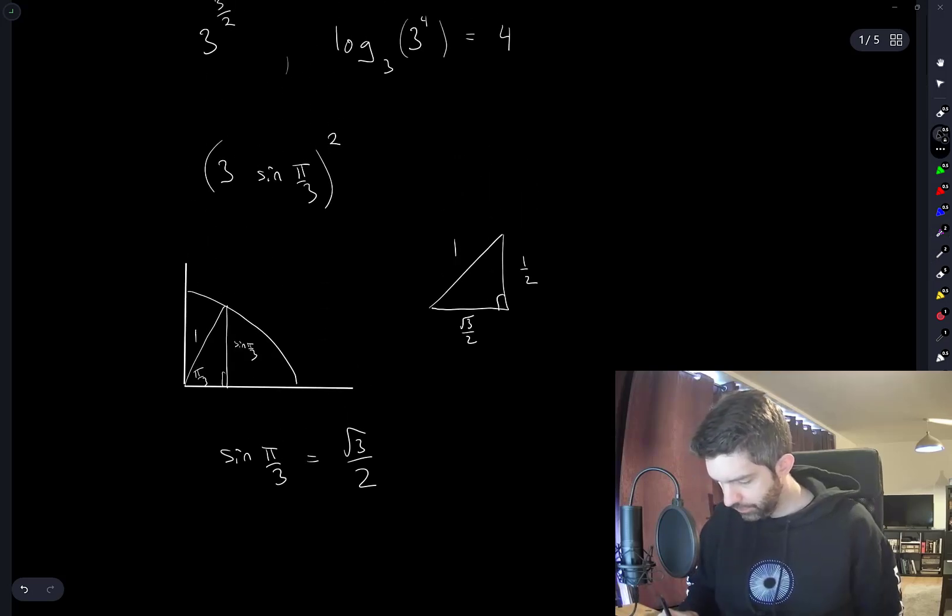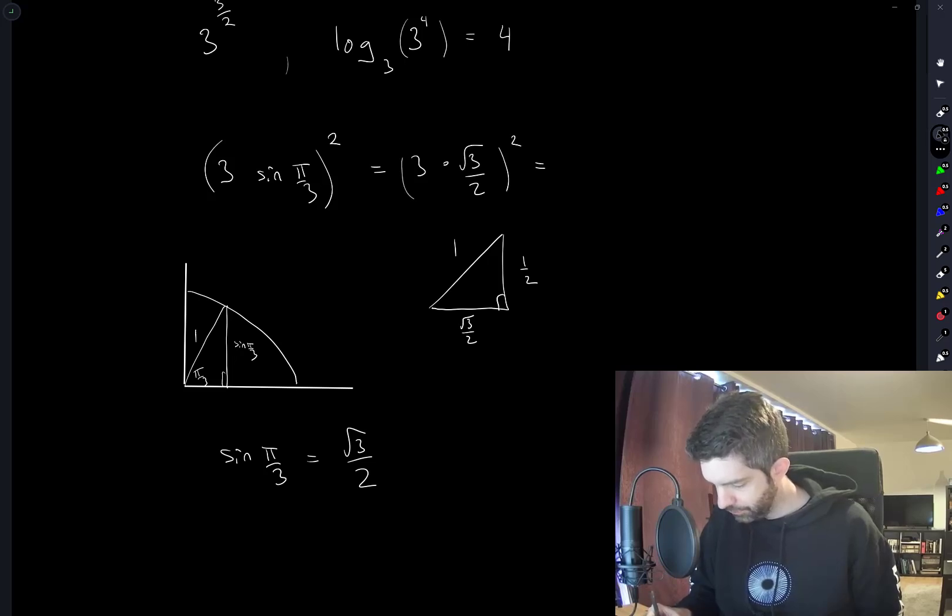So this is equal to 3 times the root 3 over 2 squared, which is 9 times 3 over 4, 27 over 4.